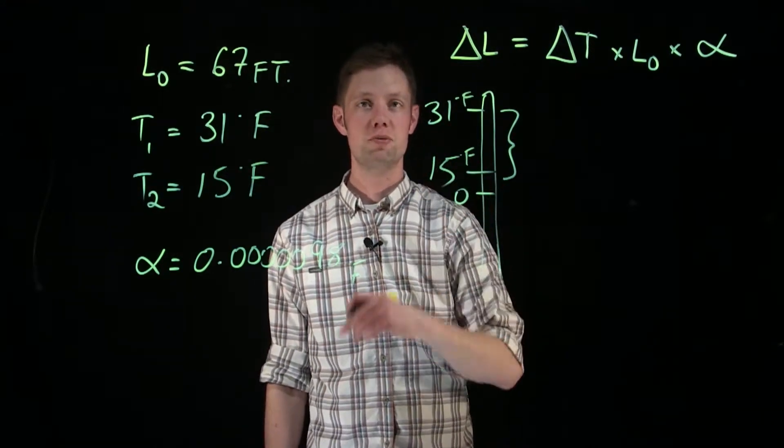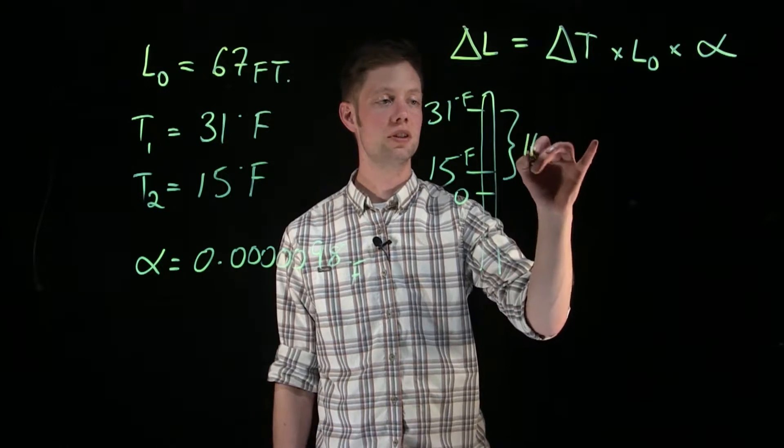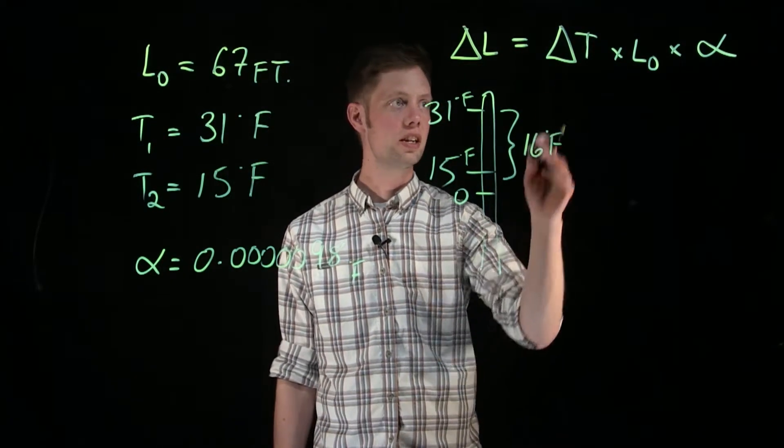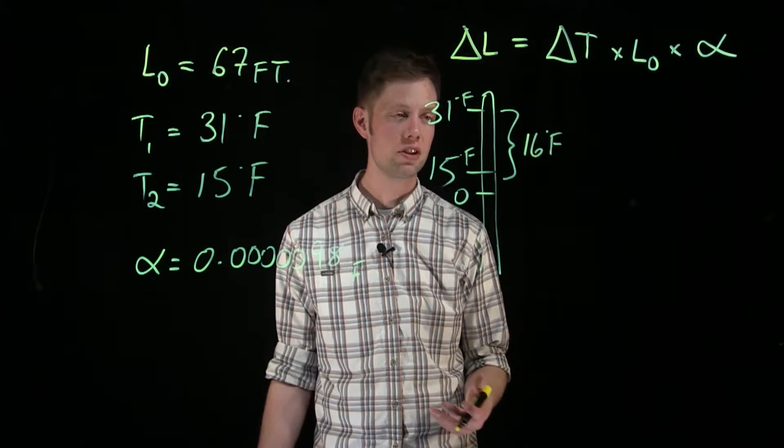To find this, I take 31 and subtract 15, that gives me 16 degrees Fahrenheit. So the ΔT in this case is 16 degrees Fahrenheit.